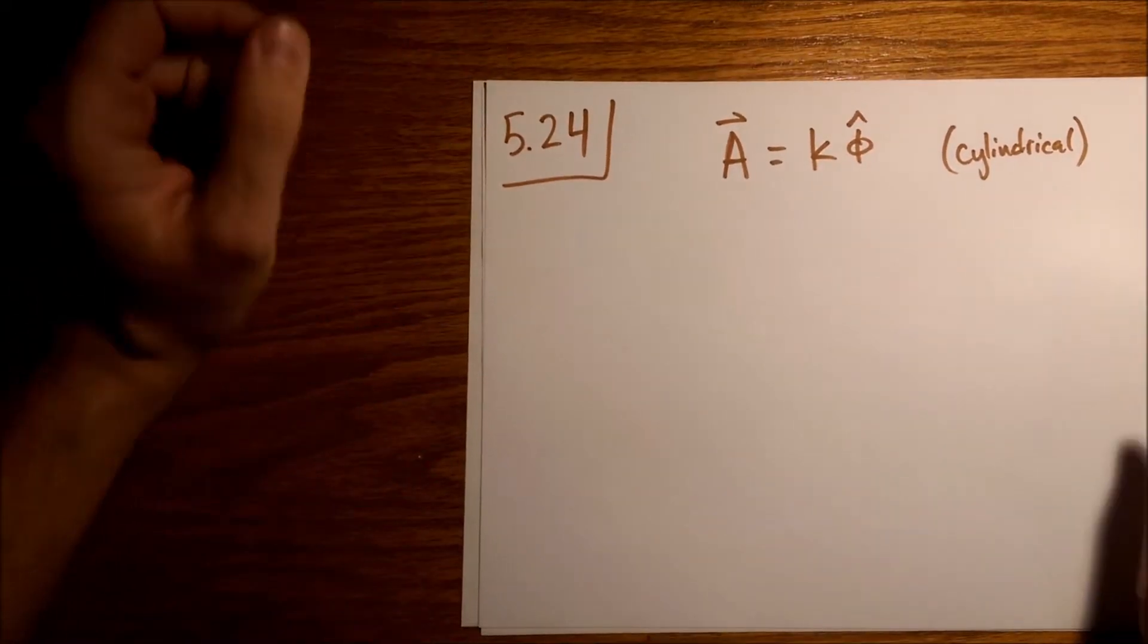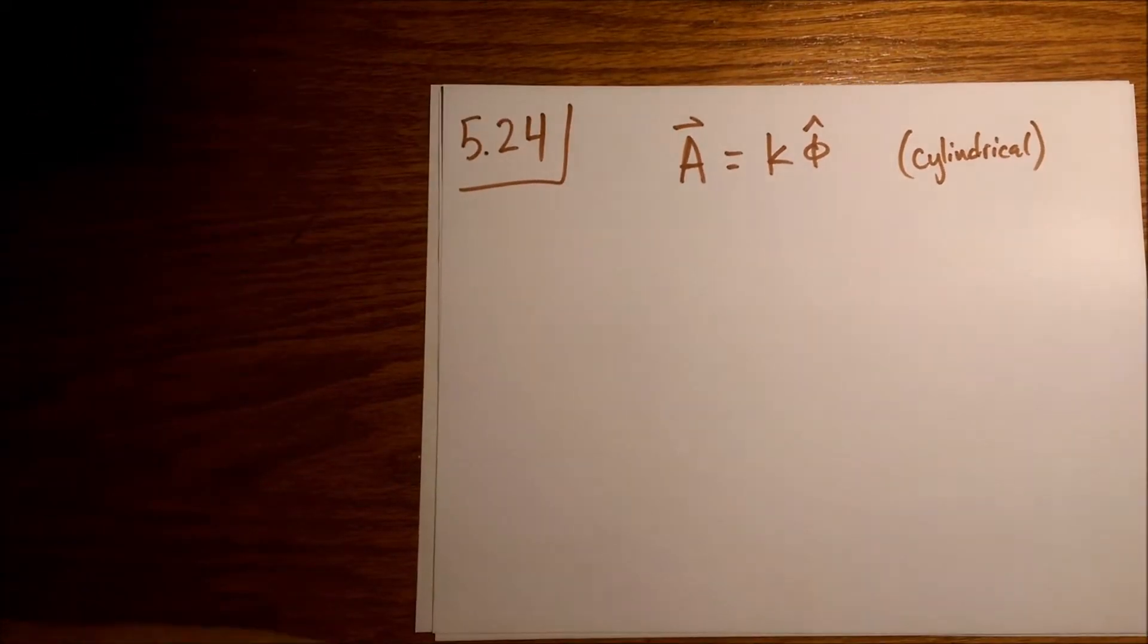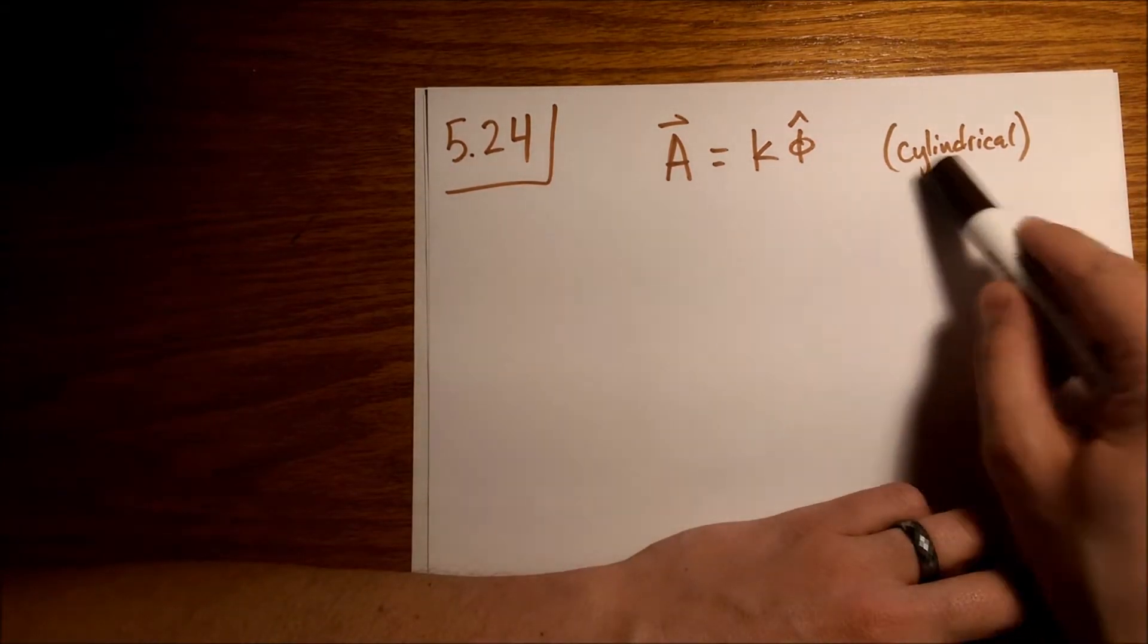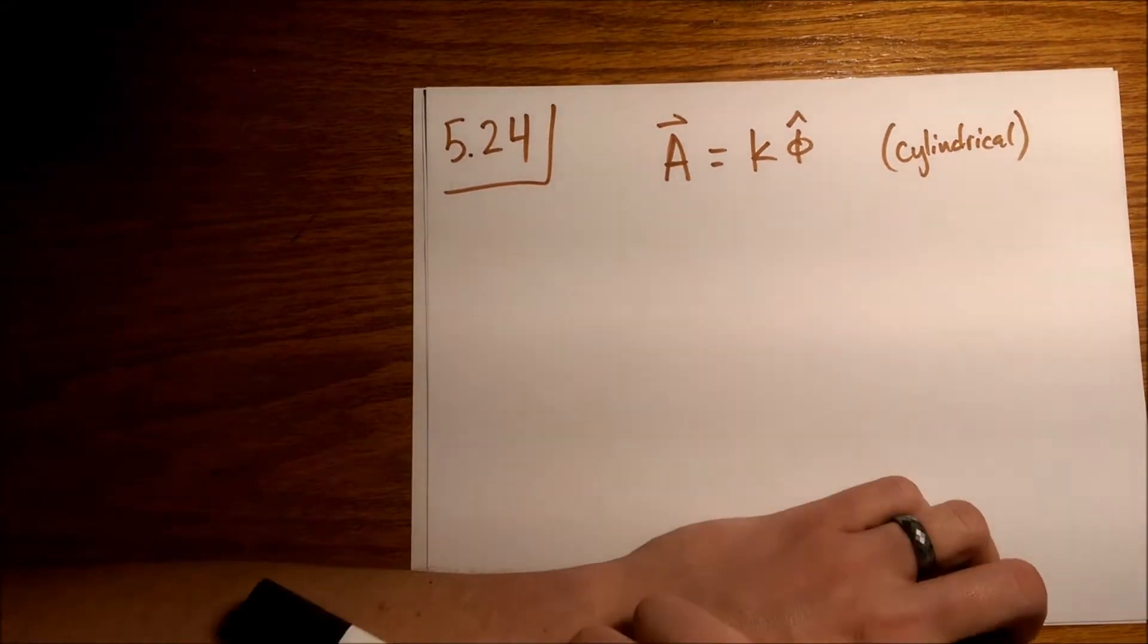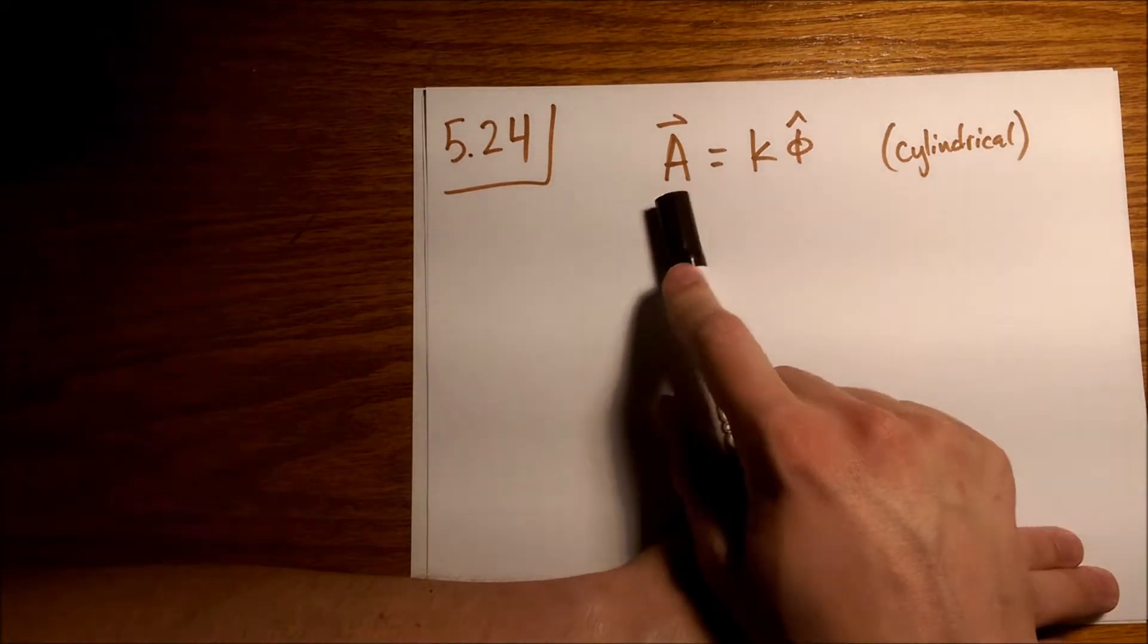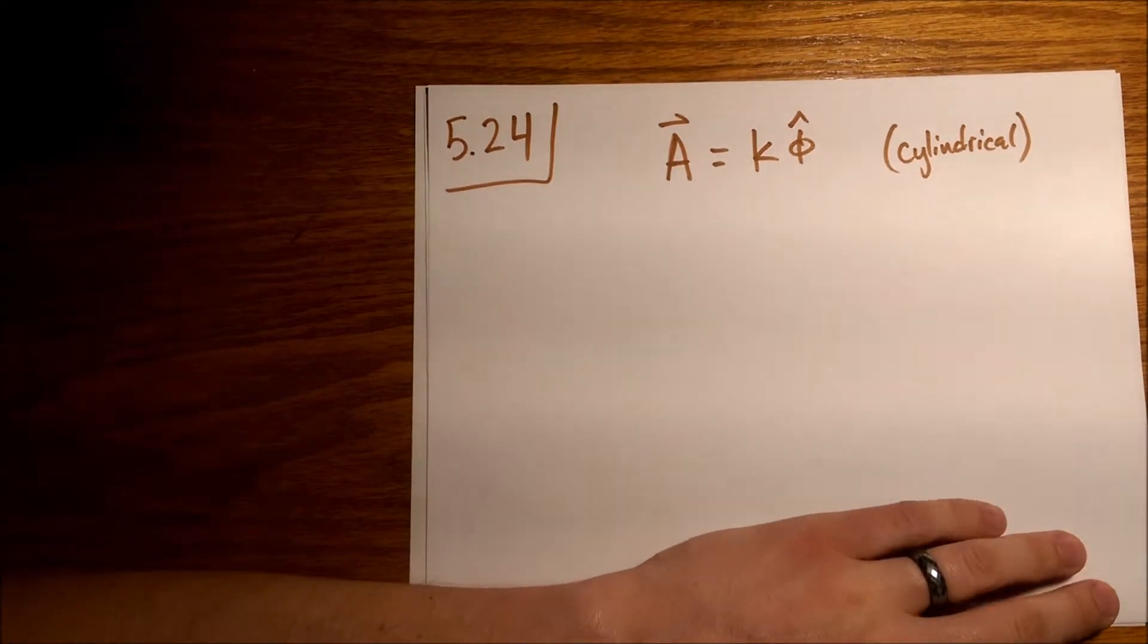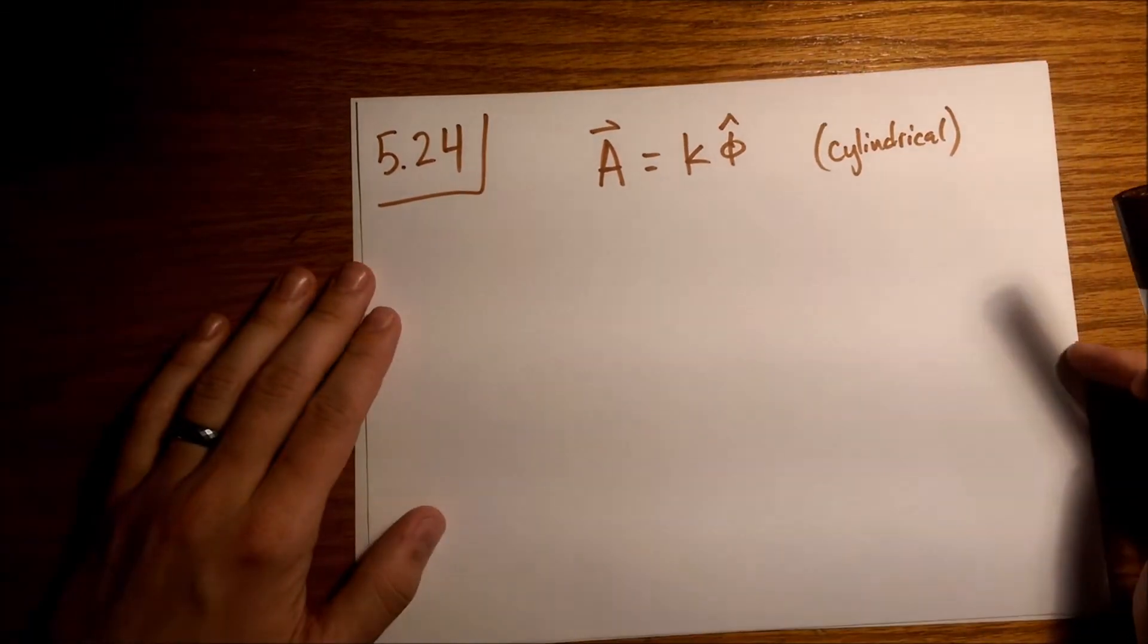Okay, let's look at Griffith's Electrodynamics Problem 5.24. We are asking ourselves what current arrangement will give us this vector potential. So A equals just k, some constant in the phi hat direction, and we're using cylindrical coordinates here.